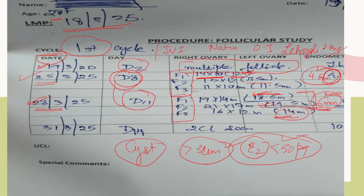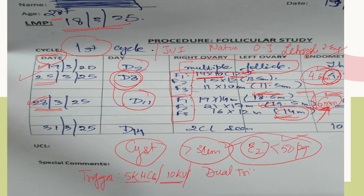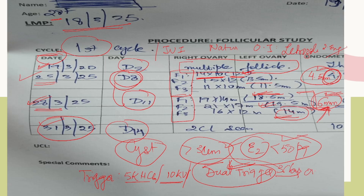When mature follicles and a thick endometrium are seen, we give the trigger on that day itself. The standard triggers are 5000 HCG or 10000 HCG. Sometimes patients fail to ovulate with these, so we can give a dual trigger — especially for IUI, but sometimes even for natural cycles. On 31st March, Day 14, after 36 hours from the trigger the egg will ovulate. That is when you ask the couple to have natural intercourse, or if planning IUI, it should be done approximately 36 hours after the trigger injection.